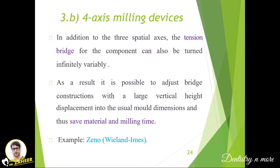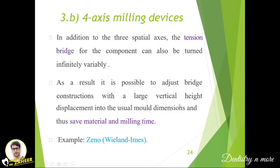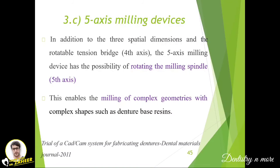In four-axis milling devices, in addition to the three spatial axes, the tension bridge for the component can also be turned infinitely variable. As a result, it is possible to adjust bridge constructions with large vertical height displacement into the usual mold dimension, saving material and milling time. The axes are X, Y, Z, and A — where A is the vertical height displacement dimension. In five-axis milling devices, in addition to the three spatial dimensions and the rotatable tension bridge (fourth axis), there is also the possibility of rotating the milling spindle. This enables milling of complex geometries with complex shapes such as denture bases, making it the most sophisticated milling device.